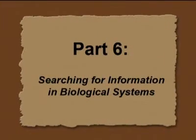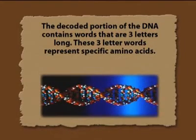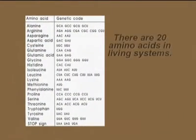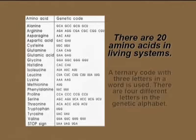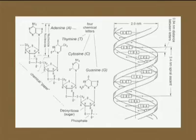Let's have a look at biological systems. Does the code found within DNA fit into the definition domain of information? That is a very important question. The decoded portion of the DNA contains words that are three letters long. Their three letters represent specific amino acids: adenine, thymine, cytosine, and guanine. There are four letters in the genetic code. You see the 20 amino acids in the genetic code — one word has three genetic letters. It is a ternary code with three letters in a word. There are four different letters in the genetic alphabet, and here you see the chemical formulas of the four letters.